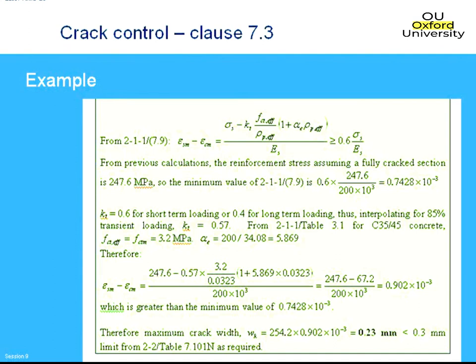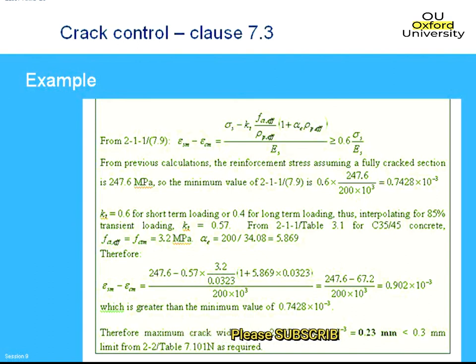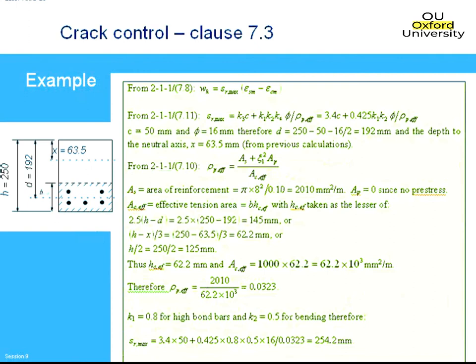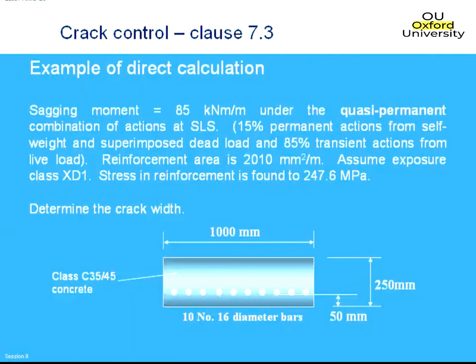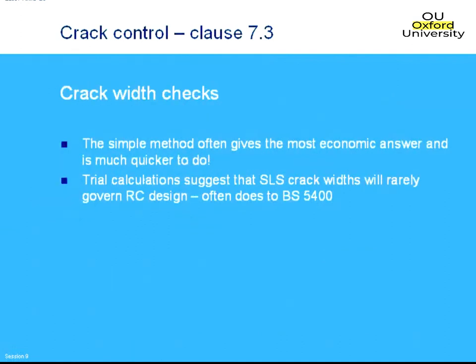As noted earlier, generally you would not use the detailed method. You would simply take the stress of 247 MPa and go straight to the tables to read off whether you comply - which you would do in this case.